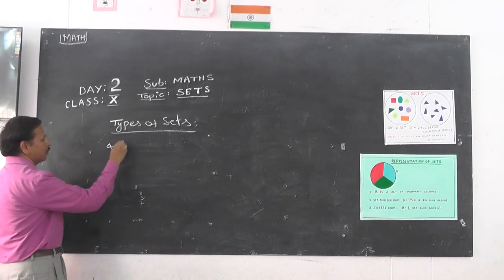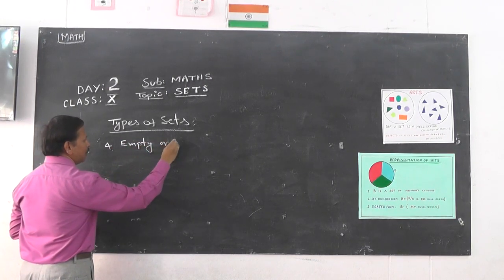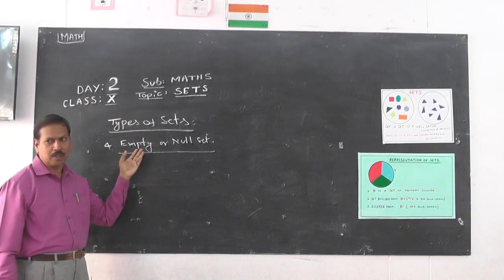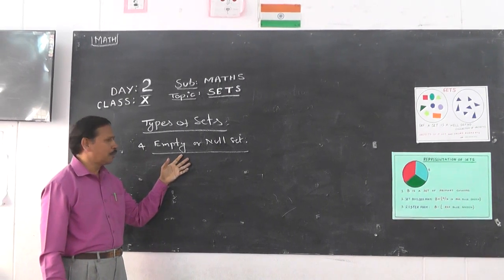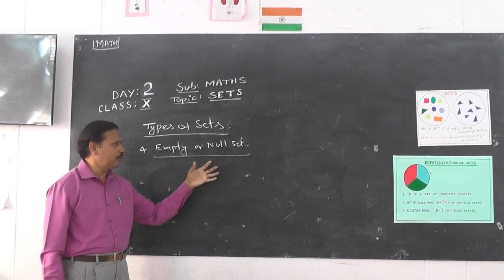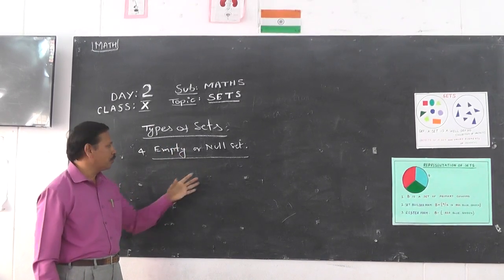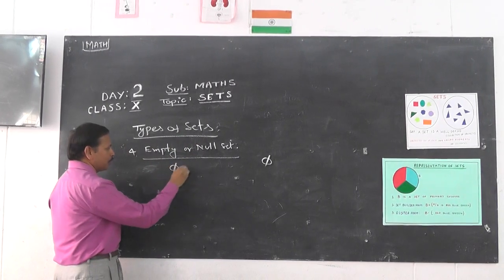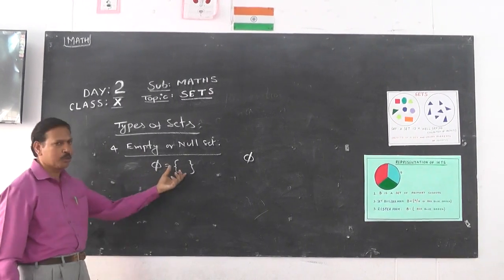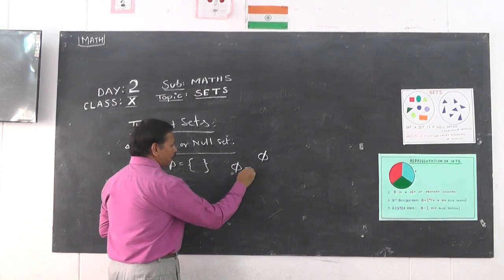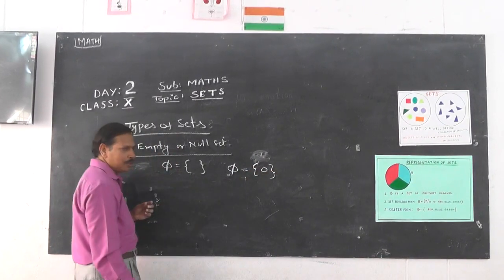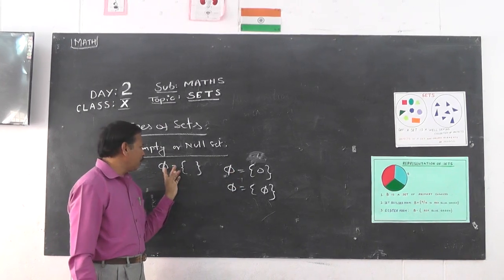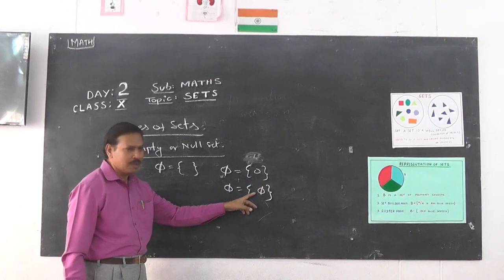Now one important set: the empty set. Empty means nothing, so a set which contains no elements is called an empty set. It is denoted by φ (phi) or by empty curly braces {}. Important note: if you write {0}, it is not an empty set because 0 is an element. If you write {φ}, it is also not an empty set. An empty set must have absolutely nothing inside the brackets.